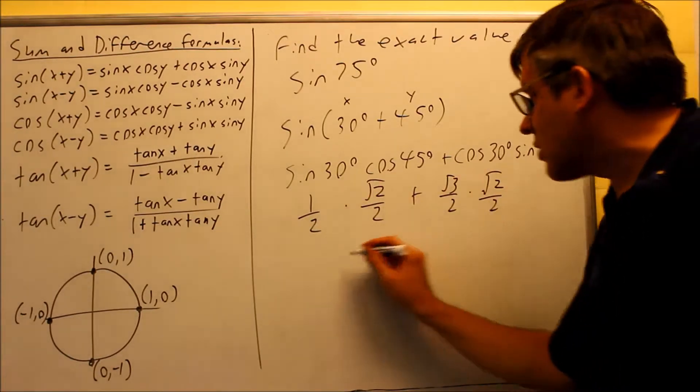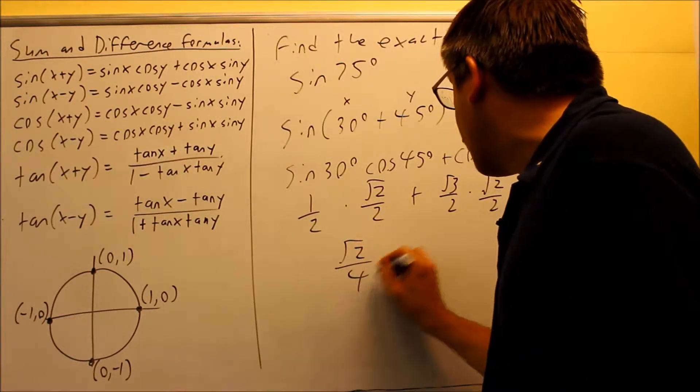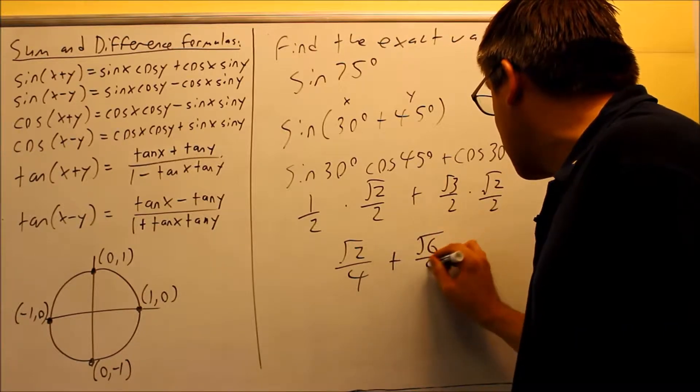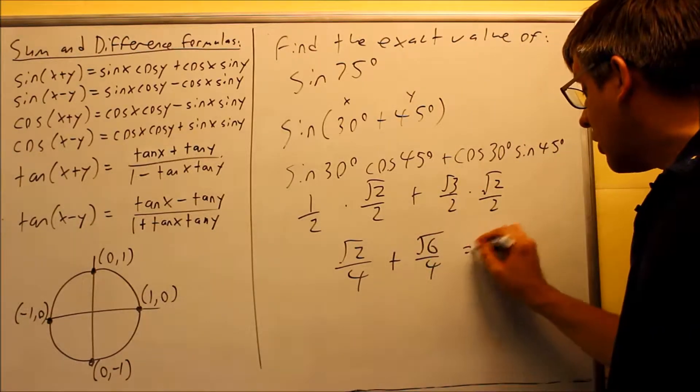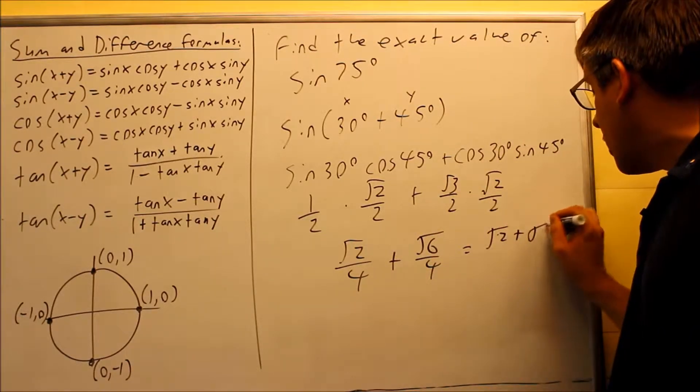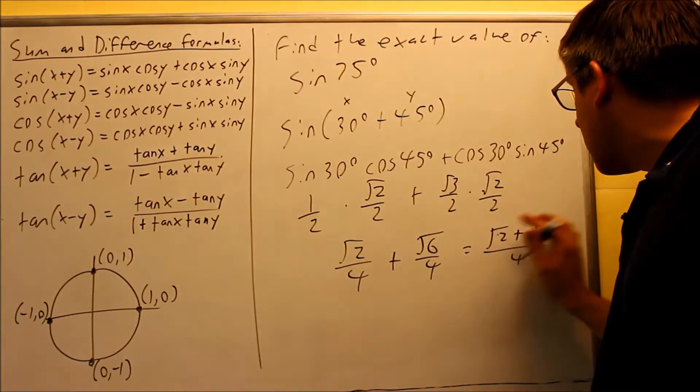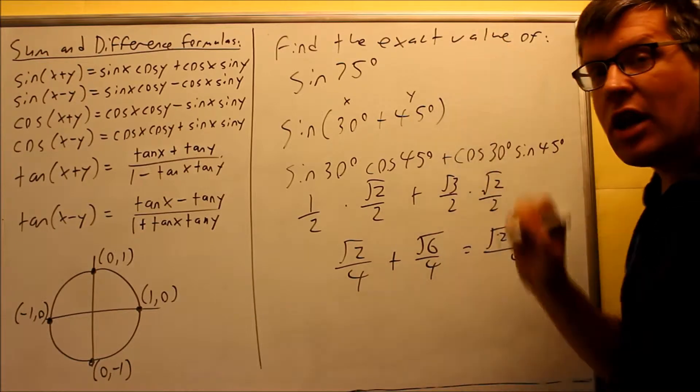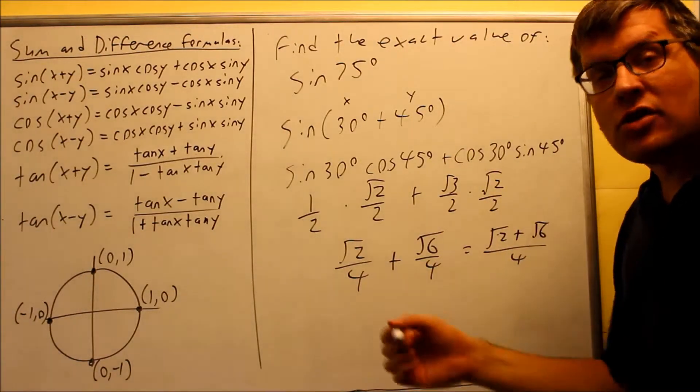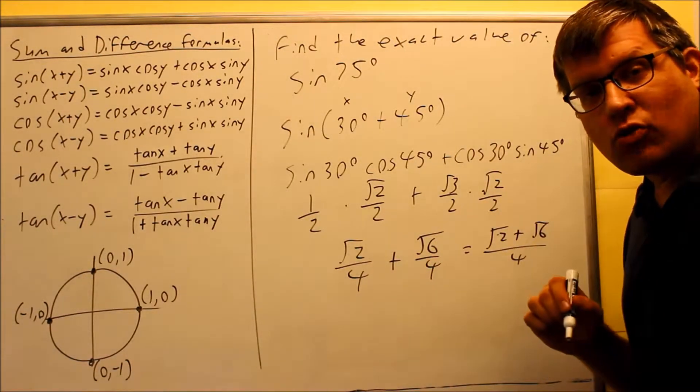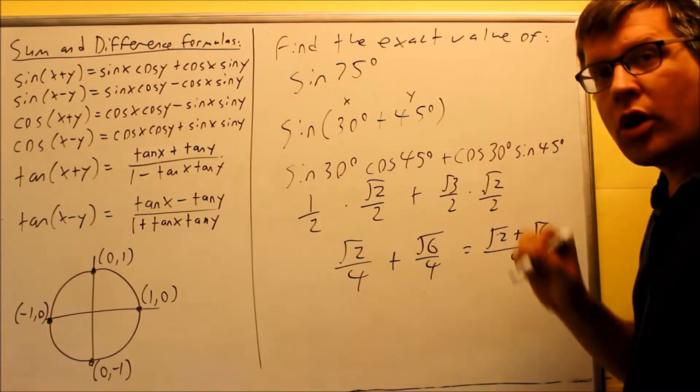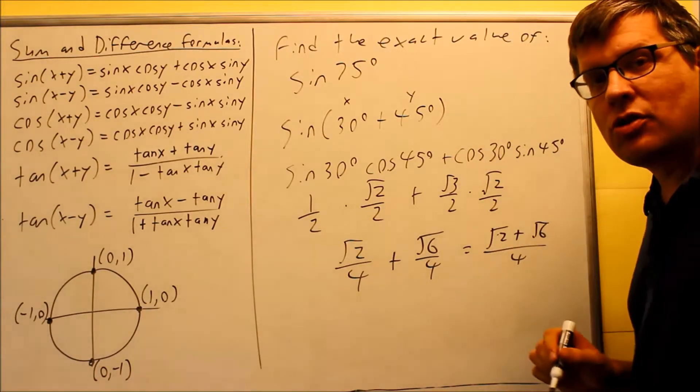If we multiply across the top, across the bottom, square root of 2 over 4 plus square root of 6 over 4. You can write it like this, or if you'd like to put it over a single denominator, we could also do that. So either one of these would be considered the exact value. Remember, exact value is using fractions or square roots if necessary. You don't want to use a calculator because that would be just an approximation.